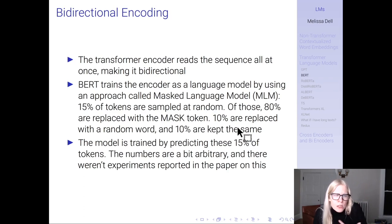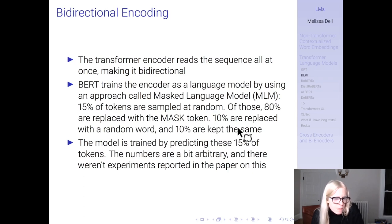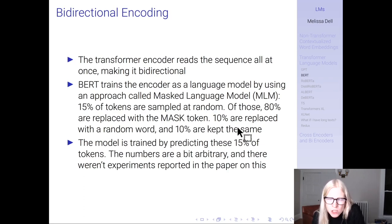The transformer encoder reads the sequence all at once, making it bidirectional. But how do you train it? You can't predict the next word because you can already see it. Instead, BERT uses masked language modeling: 15% of tokens are sampled at random. Of those, 80% are replaced with a mask token, 10% are replaced with a random word, and 10% are kept the same. The model is trained by predicting these 15% of tokens. Why 15%? Not entirely clear — they didn't report experiments on it, but it seems to work.